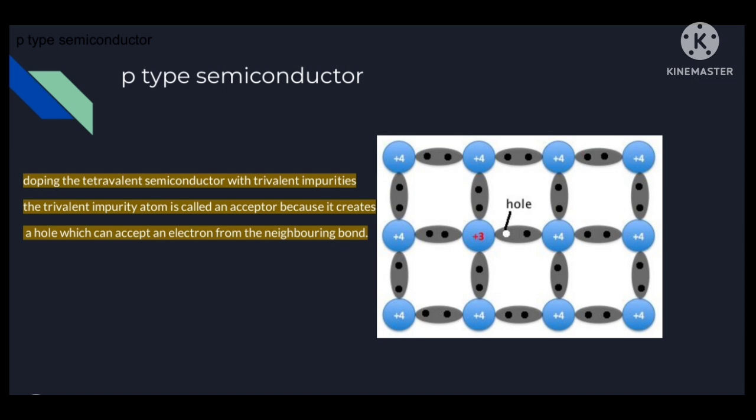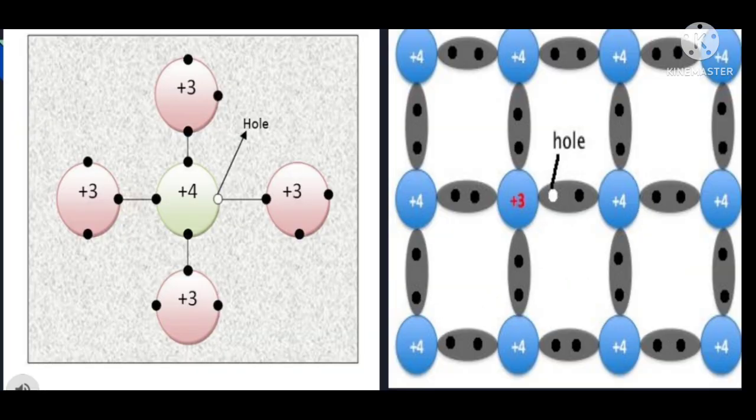For example, indium, which has three valence electrons. When such an atom is added into the silicon crystal, it replaces one of the silicon atoms and settles in the lattice site of the replaced semiconductor atom. This indium atom forms three covalent bonds with the neighboring three silicon atoms, and the fourth bond remains incomplete — it has a deficiency of one electron, which is called a hole.